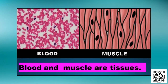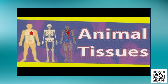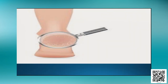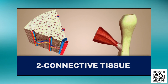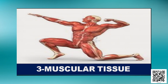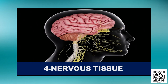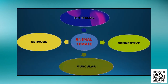Blood, muscle, and all such structures are called tissues. In this lesson we are going to learn about animal tissue. Animal tissues are of four types: epithelial tissue, connective tissue, muscular tissue, and nervous tissue. We are going to learn about the structure, location, and function of each tissue one by one. Let us start with epithelial tissue.